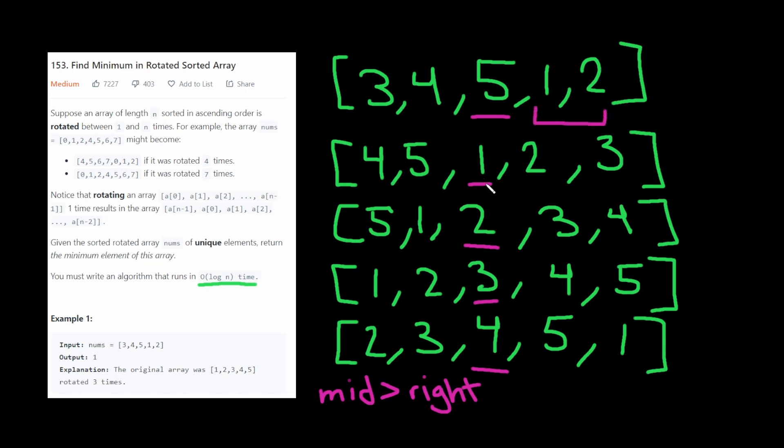Here, is one greater than three? No. So therefore, the array that we consider is this. Is two greater than four? No. So we consider this. Is three greater than five? No. We consider this. Is four greater than one? Yes. So we consider this. And so you can see that this condition here actually works for all of these rotations.